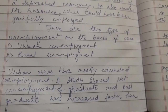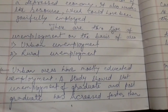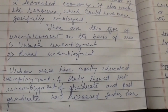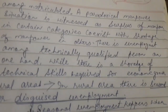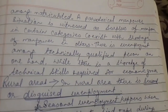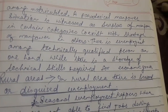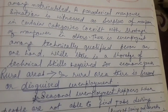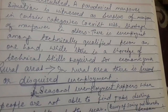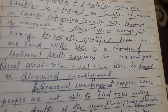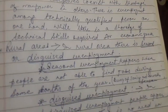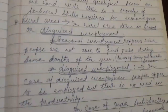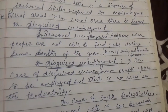The first type is urban unemployment and the second is rural unemployment. Urban areas have mostly educated unemployment. A study showed that unemployment among graduates and postgraduates had increased faster than among matriculated or illiterate persons. A paradoxical manpower situation is witnessed as surplus of manpower in certain categories coexists with shortage in others. There is unemployment among technically qualified people on one hand, while there is a shortage of technical skills required for economic growth.